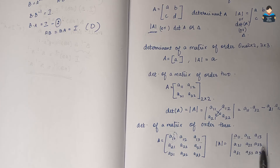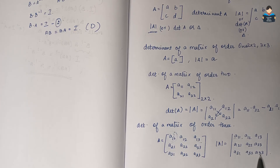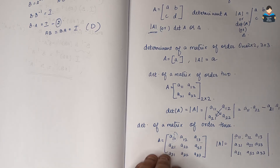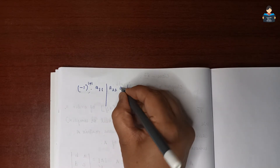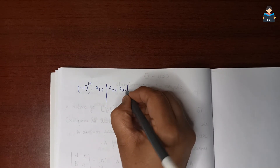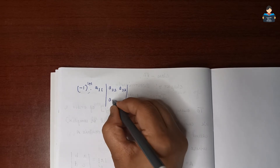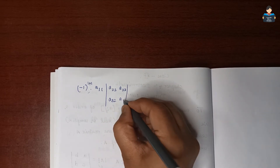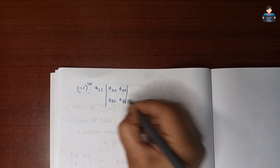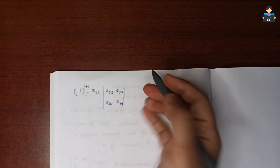For element A11: the remaining 2 by 2 minor is A22, A23, A32, A33. For element A12: we remove its row and column, and the remaining minor is A21, A23, A31, A33.